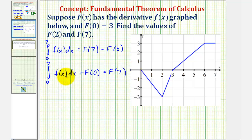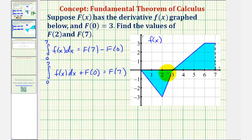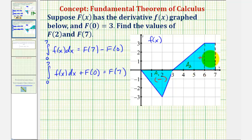We'll determine the value of this definite integral by analyzing the graph of f of x. Let's shade the area bounded by the function and the x-axis over the closed interval from 0 to 7. The area below the x-axis contributes a negative value, and the area above the x-axis contributes a positive value. Let's call these regions A sub 1, A sub 2, and A sub 3.